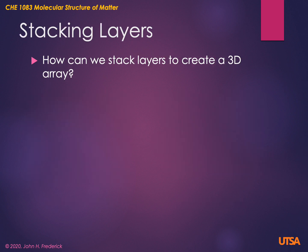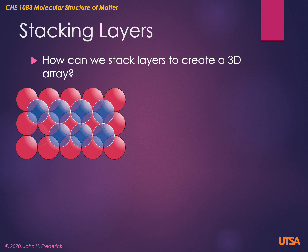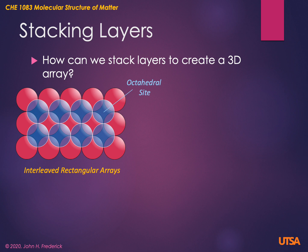Now, if we move to a three-dimensional array, how can we stack these two-dimensional layers to create a very efficient packing scheme? Starting with a rectangular array, instead of stacking spheres directly on top, we'll put those spheres on the second layer directly above the holes in the first layer. This gives us a little bit more efficiency — we'll call this an interleaved rectangular array. A hole in the original layer forms an octahedral site: it has a sphere above and below, and four around its equator, so it is surrounded by six atoms in an octahedral arrangement.